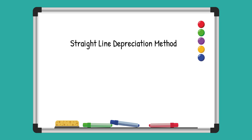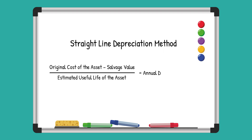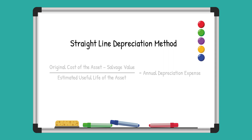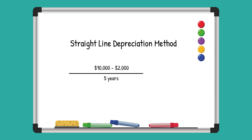Let's look at an example. Let's say a company buys a machine for $10,000 and it's expected to last for five years, with a salvage value of $2,000 at the end. To calculate yearly depreciation, you subtract the salvage value from the original cost and then divide the rest by the useful life.